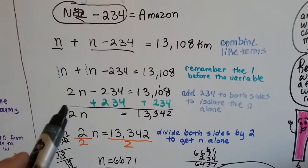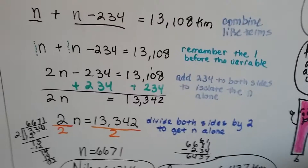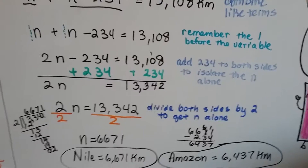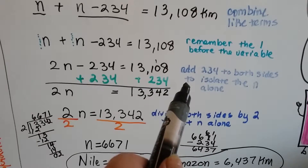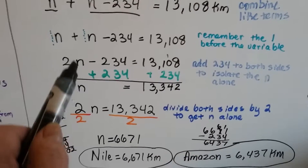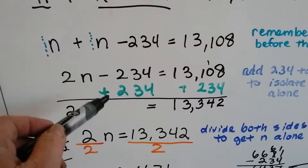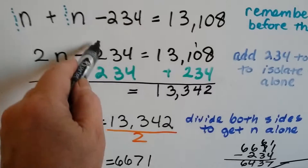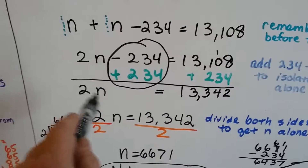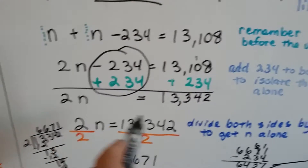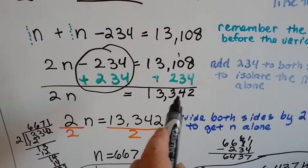This is starting to look familiar. Because it says minus 234, we add 234 to both sides to isolate N. The minus 234 and plus 234 become a zero pair and cancel out, leaving 2N on the left. On the right, 13,108 plus 234 becomes 13,342.